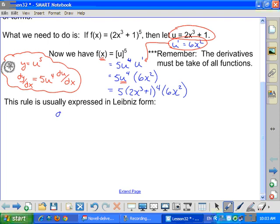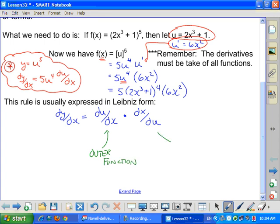Leibniz notation. The derivative of a function is equal to the derivative of the whole function with respect to, or the derivative of x with respect to u. du by dx. Sorry. Derivative of a function multiplied by dx by du. So there's the Leibniz notation. So it's the derivative of the outside function, the outer shell, the outer function, and derivative of inner function.